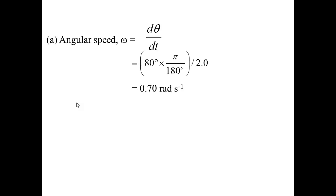The time taken to cover an angle of 80 degrees is 2 seconds, so I divide by 2. So the answer for part A is 0.7 radians per second.